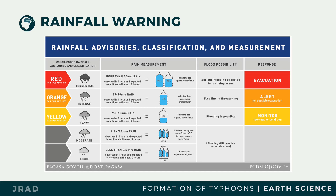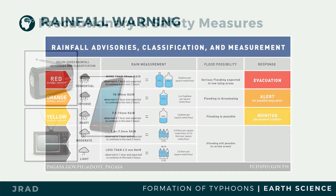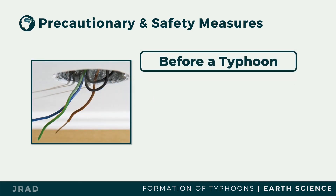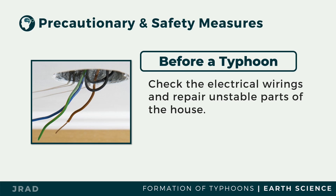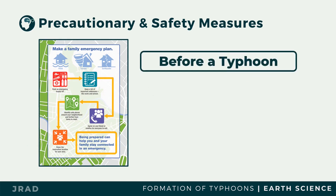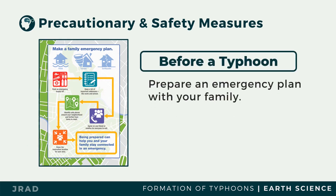Here are some ways to be prepared before a typhoon. Keep yourself updated with the latest weather forecasts. Check electrical wiring and repair unstable parts of the house. Families should always have an emergency kit containing ready-to-eat food such as canned goods and water. In any disaster, families should have emergency plans, know the contact numbers of each family member, and identify safe spots and meeting locations in case any family member gets lost.